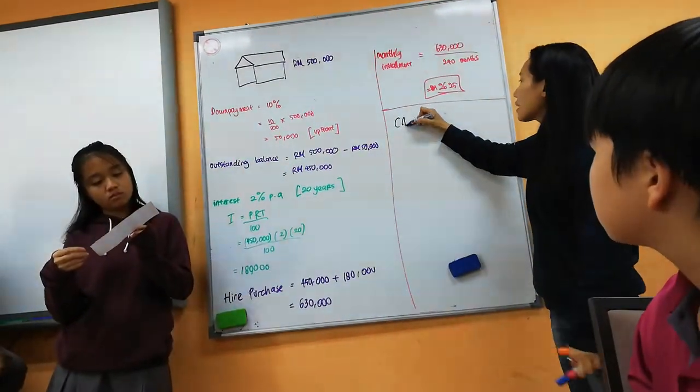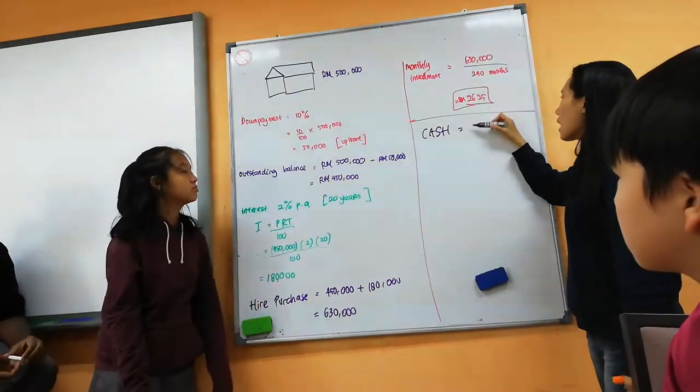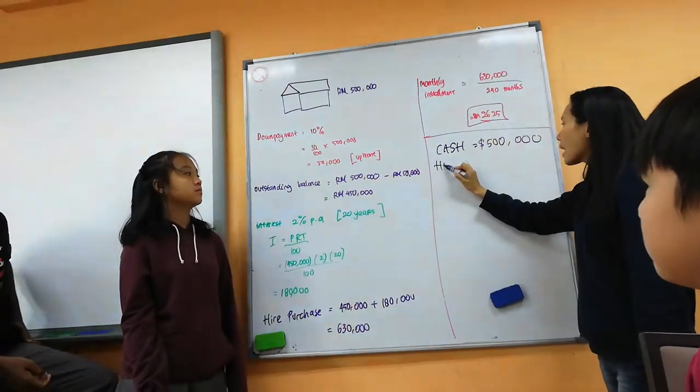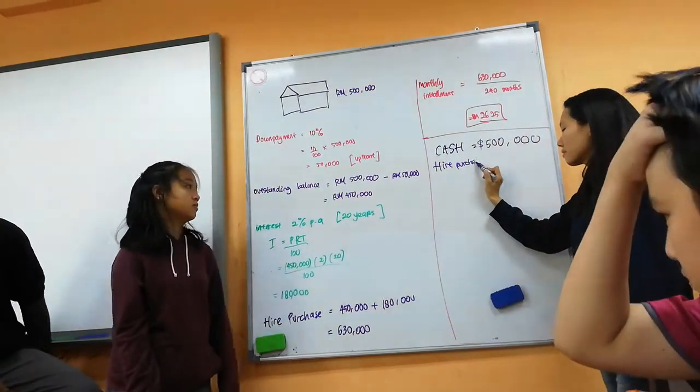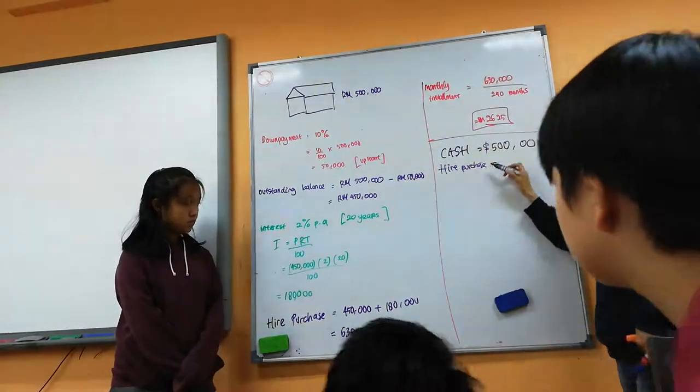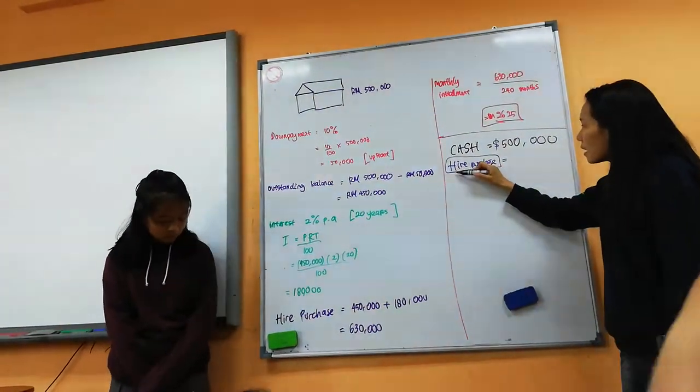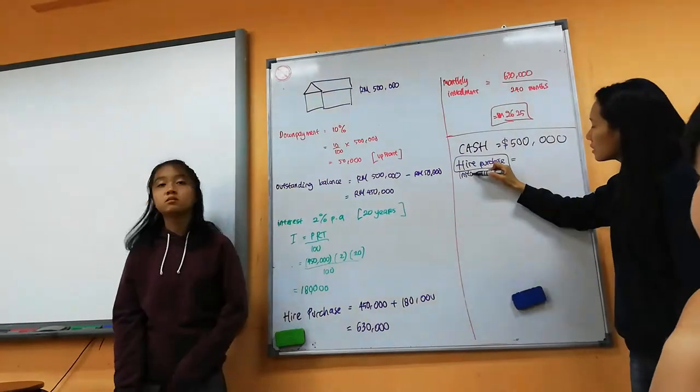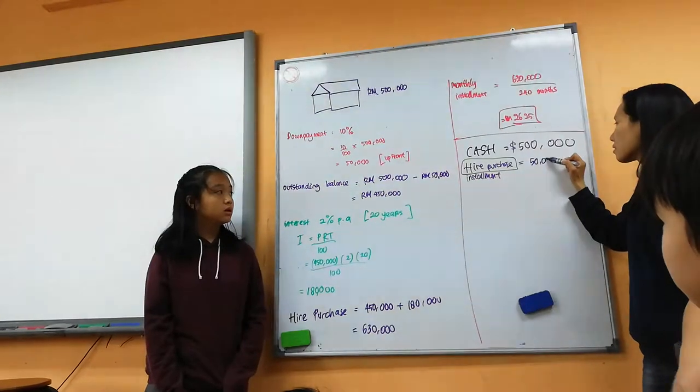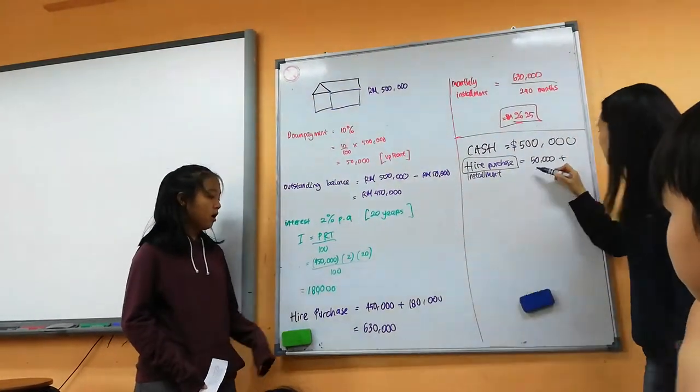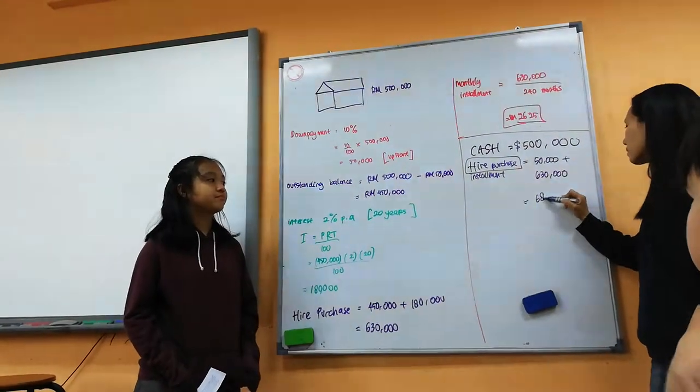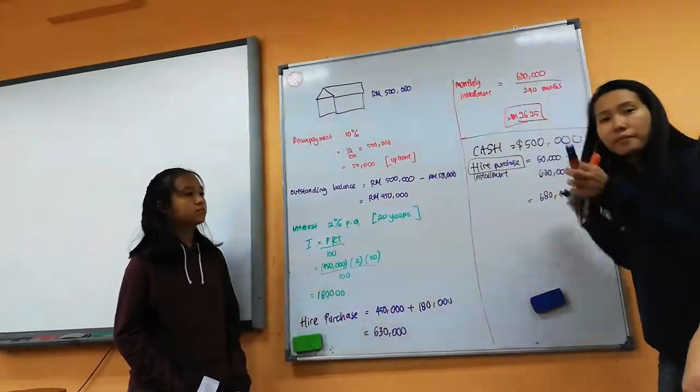Alright, so anyway, let's compare. If I pay cash, I use only $500,000. If I use with higher purchase. $630,000 plus $50,000. Correct. So $680,000. If I use higher purchase. Higher purchase meaning installment. You pay a lot. I need to pay my down payment first, correct? Yes. Plus $630,000. Which is $680,000. Okay. You can stop. Now.